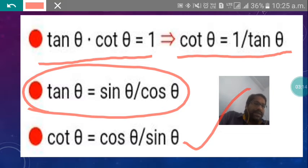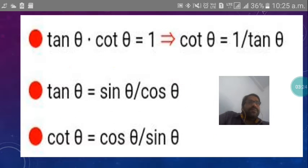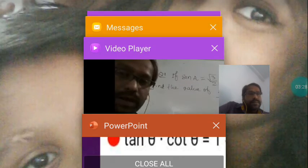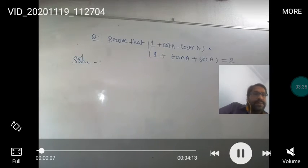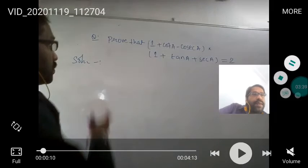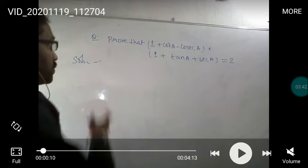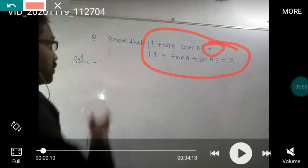We will learn more next class and practice new problem sets there. This video is based on identities. We have to prove that: 1 plus cot A minus cosec A, multiplied by 1 plus tan A plus sec A, is equal to 2. Let us start solving this.